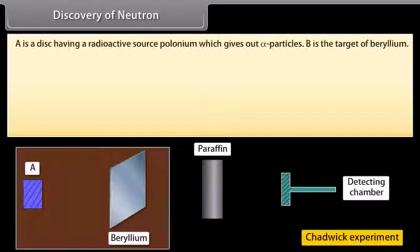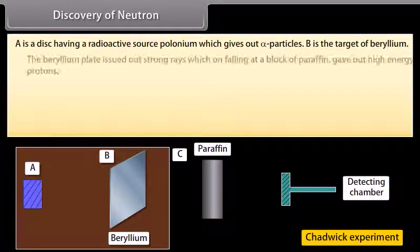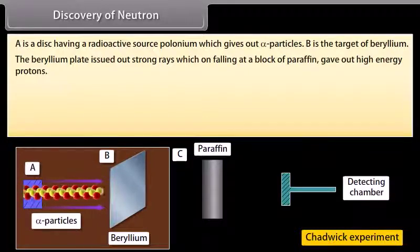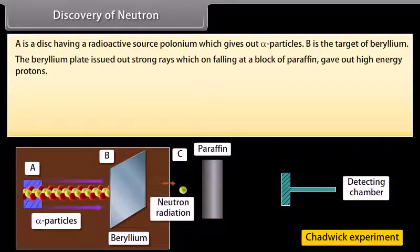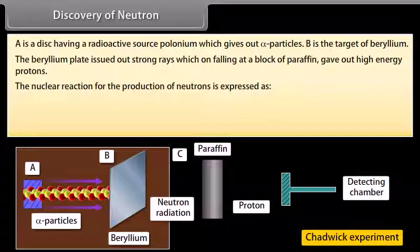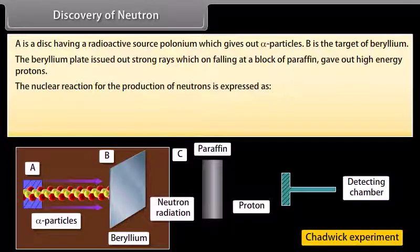Discovery of neutron. A is a disk having a radioactive source polonium which gives out alpha particles. B is the target of beryllium. Both A and B are placed in an evacuated chamber C. The beryllium plate issued out strong rays which on falling at a block of paraffin gave out high energy protons. The nuclear reaction for the production of neutrons is expressed as.